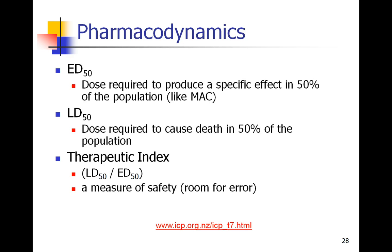The ED50 is the effective dose for 50%. This is the dose that you would have to give to get a certain effect in 50% of the population. For example, how much propofol do I need to give so that 50% of the population will go to sleep? Obviously, there's a bell curve — some people need more and some need less — but this is the ED50.